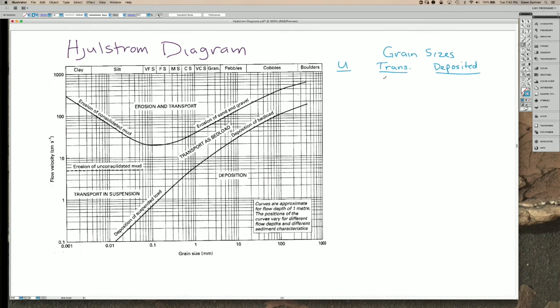Okay, so we can look at this in another way in terms of a change in flow speed. So if we start with a flow speed of 100 centimeters per second, and it goes down to 10 centimeters per second,